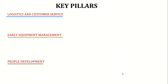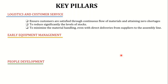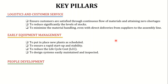The seventh pillar is Logistics and Customer Service. There are two types of logistics: inbound logistics, where materials come from suppliers to the factory, and outbound logistics, where finished products go from the store to end users. In between, materials move from one workstation to another as work-in-process inventory. The goals are to achieve 100% efficiency, reduce stock levels significantly using the just-in-time concept, minimize material handling with direct deliveries from suppliers to the assembly line, ensure customer satisfaction through continuous flow of materials, and maintain zero shortages.